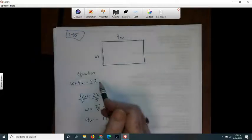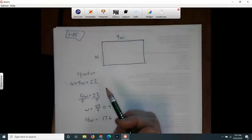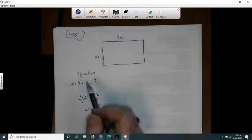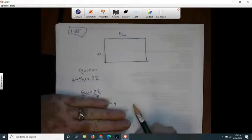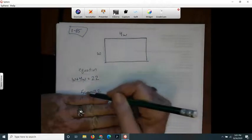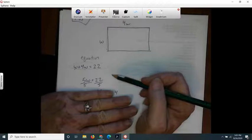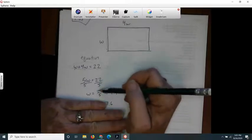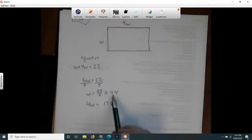It says how long is each side? So I combine like terms, W plus 4W is 5W. So I had 5W equals 22, and then I divided both sides by 5, just doing my algebra. And I got W equals 22 over 5. I got out a calculator and found out that 22 over 5 is 4.4.